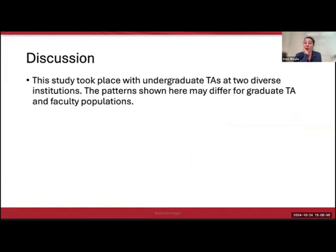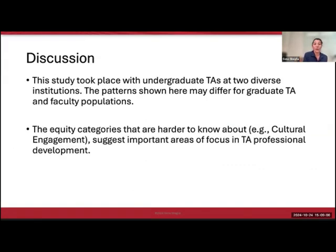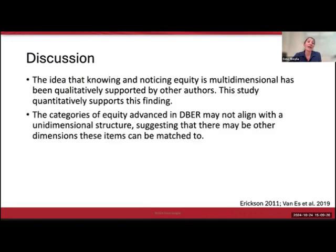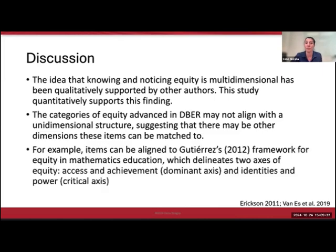This study took place with undergraduate TAs at two diverse institutions, and these patterns may be different for graduate TAs and faculty populations. The equity categories harder to know about—in this case cultural engagement—suggest important areas of focus for TA professional development. The finding that knowing and noticing equity are multi-dimensional constructs has been qualitatively supported by other authors, and this study quantitatively supports that finding. The six categories advanced by the DBER community are useful, but they may not align with a unidimensional structure, suggesting there may be other dimensions these items could be matched to.